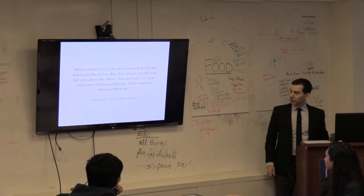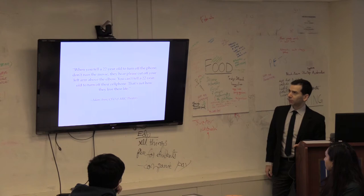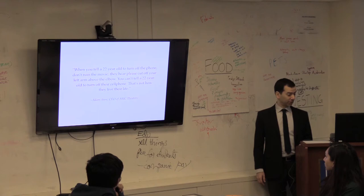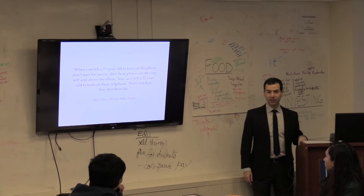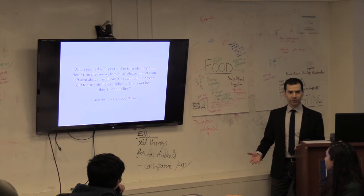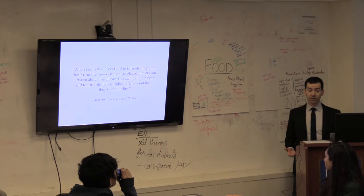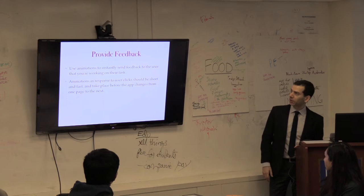The CEO of AMC Movie Theatres said this four years ago, which I thought was really funny. When you tell a 22-year-old to turn off the phone, don't ruin the movie, they hear please cut off your left arm above the elbow. You can't tell a 22-year-old to turn off their cell phone. It's just not how they live their life. They see the phone as an extension of themselves. And so they're not going to turn it off in a movie because it's part of them. And when you create an app, if you can design it in a way that feels like an extension of them, it'll be a lot more fun to use. They'll be a lot more likely to use it. So how do you do that? How do you make it into an extension of them?